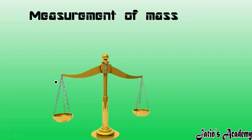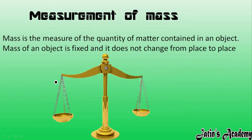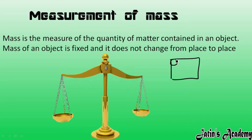Next we are having measurement of mass. What do you mean by mass? Mass is a measure of quantity of matter contained in an object. For example, this kind of object I am having — in this object, what is the quantity of matter? How much quantity of particles are arranged in this object? That quantity of matter will give you the mass of that object.